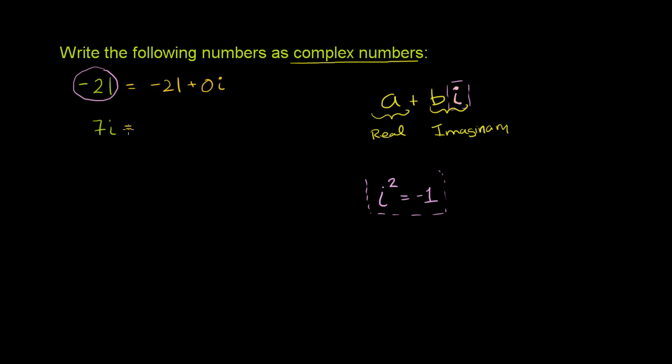Same thing down here. 7i is an imaginary number. There's no real part to this. So we could call this, the real part here is just 0. So this is 0 plus 7i.